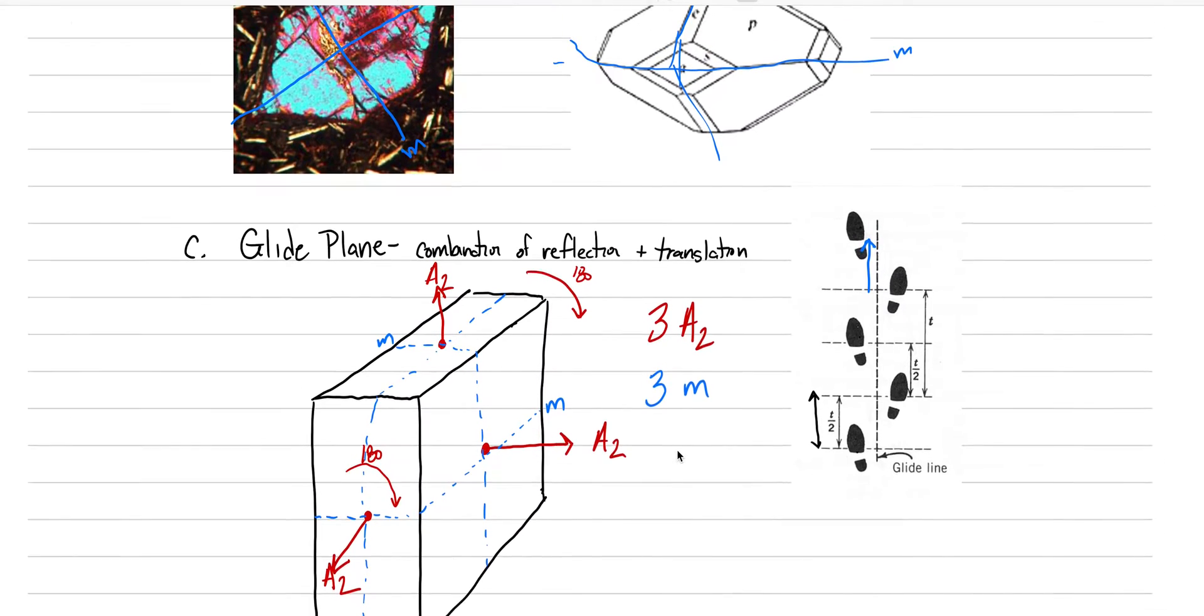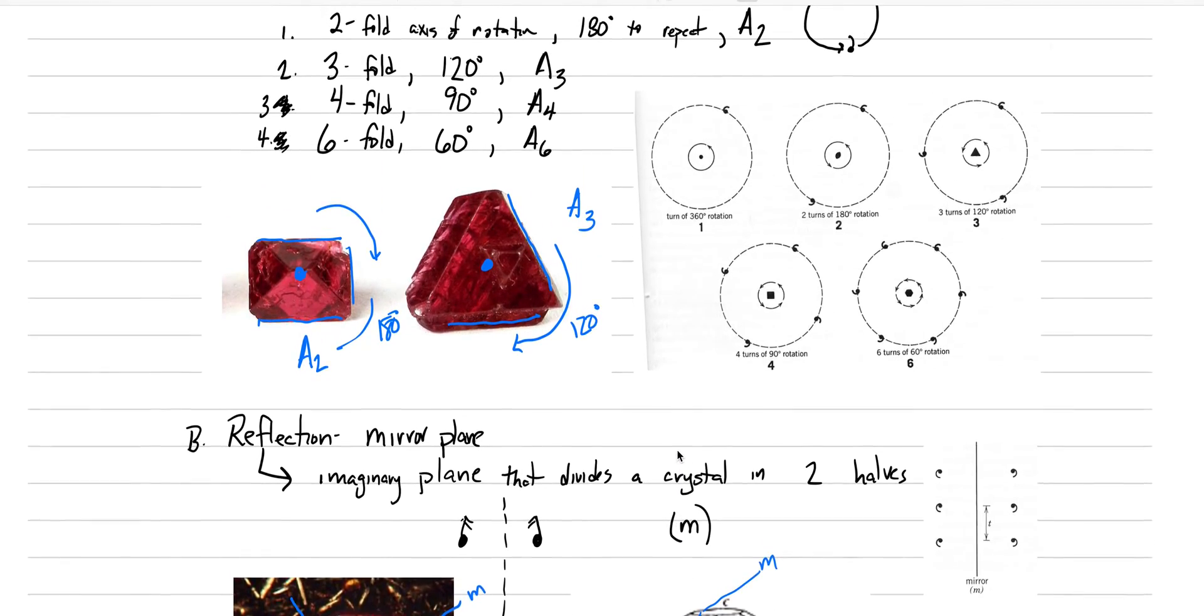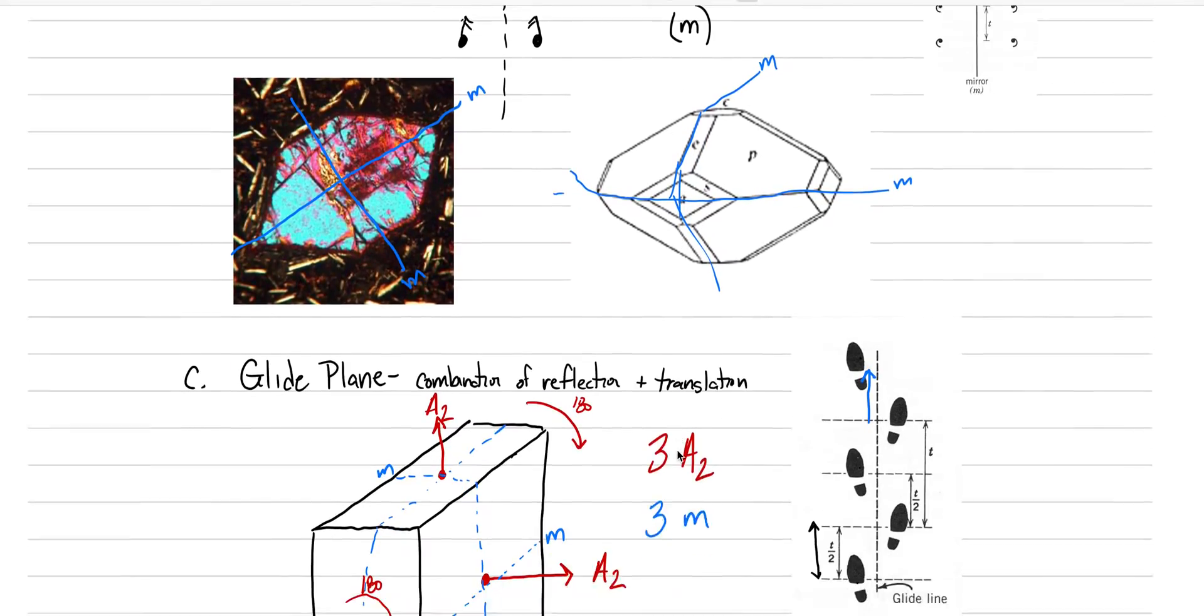We're starting back up with the next section of symmetry elements. Last time we were talking about glide planes, reflections, and rotations. Today we finish off these symmetry elements with the last two, which are inversions and rotoinversions. In the textbook, we're continuing on, going over pages 118 to 120 today.